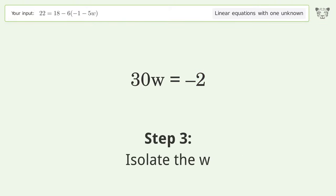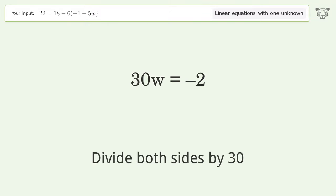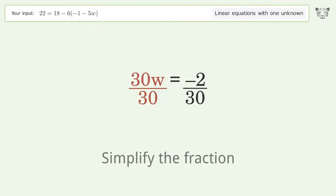Isolate the w. Divide both sides by 30. Simplify the fraction.